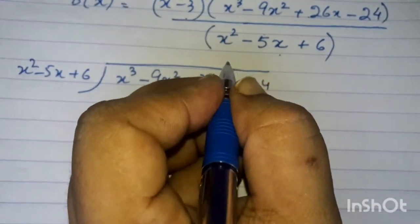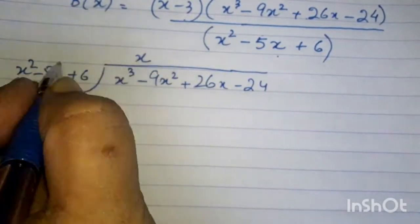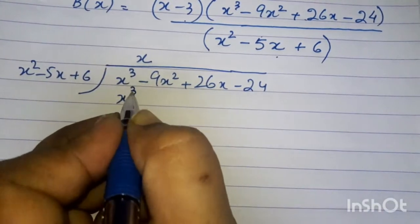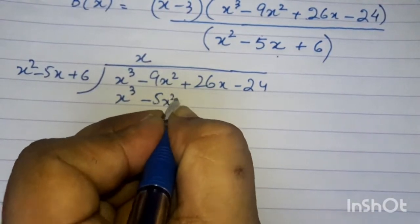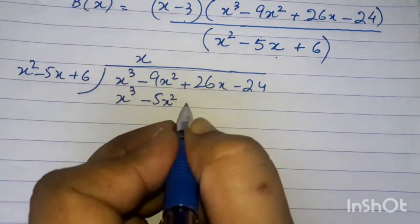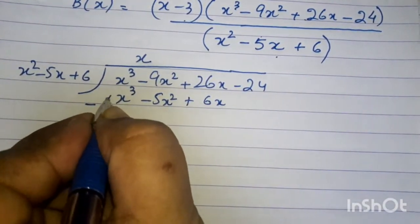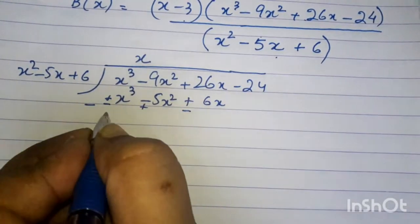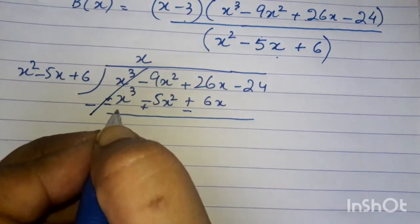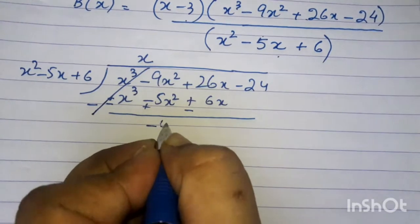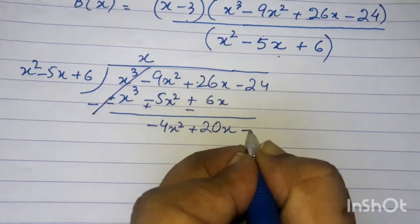Now we start the division. We divide x squared into x cubed to get x. Multiplying x squared by x gives x cubed. Subtracting and applying sign change — minus 9 plus 5 gives minus 4x squared. Bringing down 26x minus 24, we get minus 4x squared plus 20x minus 24 as the new dividend. Now divide minus 4x squared by x squared.